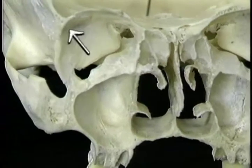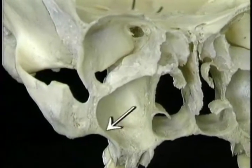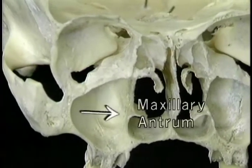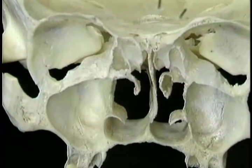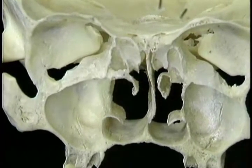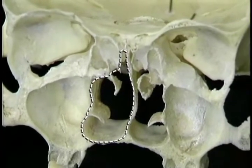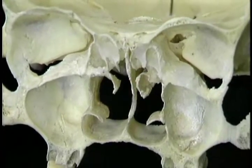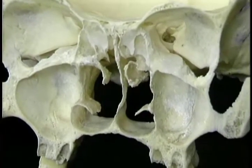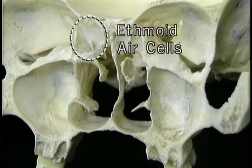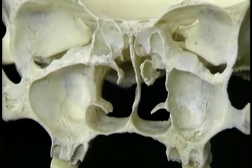Here's the back of the orbital cavity. Below it is the hollow space in the maxilla, the maxillary antrum, which we'll look at later. At about the level of the floor of the orbit, the nasal cavity becomes much narrower. The narrowing is caused by the presence of this collection of small hollow spaces, the ethmoid air cells.